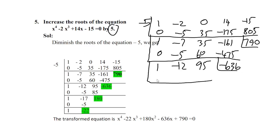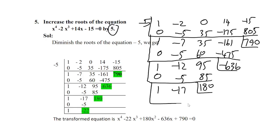Continuing the synthetic division: 0 minus 5 gives minus 17; into this gives 85; result 180. Last: 0 minus 5 gives minus 22. So the transformed equation is x⁴ minus 22x³ plus 180x² minus 636x plus 790 equals 0.